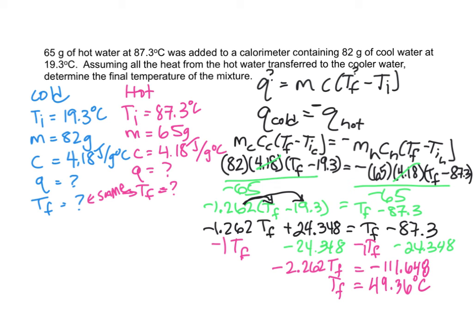And then one last thing you want to check is to make sure that this is a sensible value. Okay, this is in fact in between 87 and 19. And it's actually a little bit closer to the 19 than it is to the 87, which makes sense because you had a little bit more mass of the cold water than you did the hot.